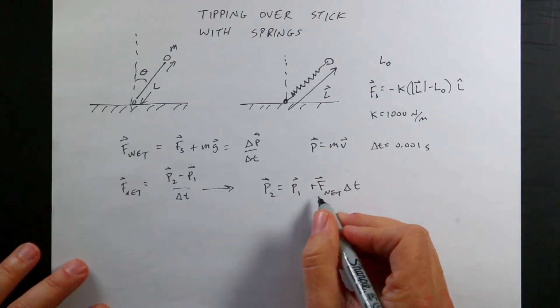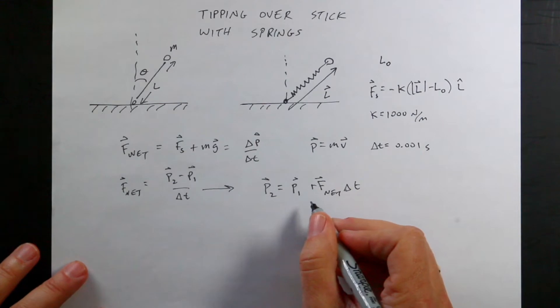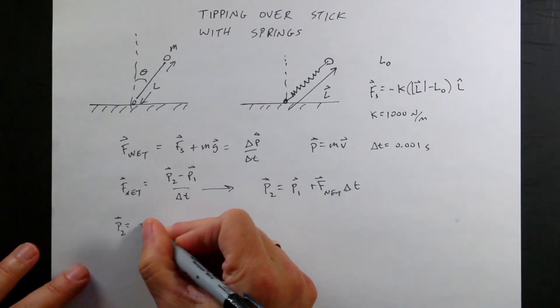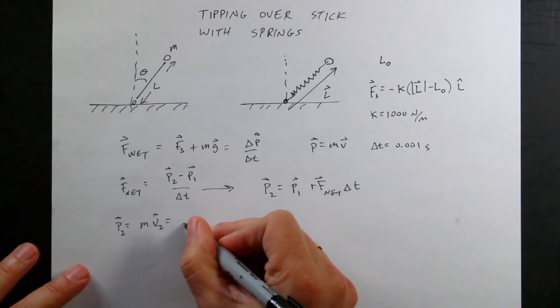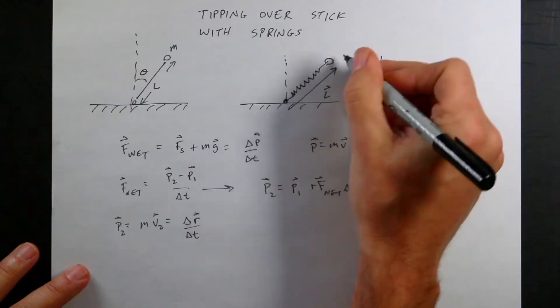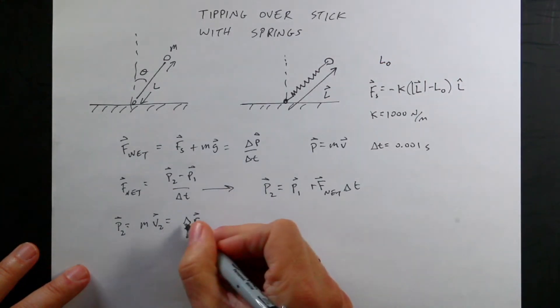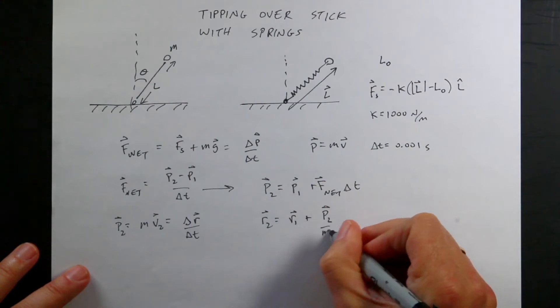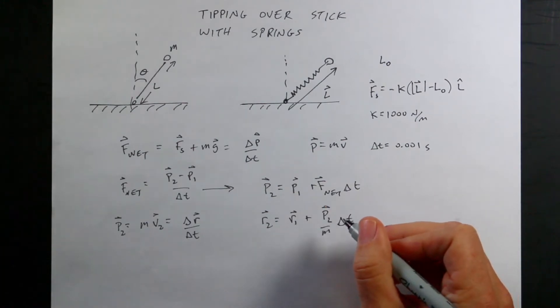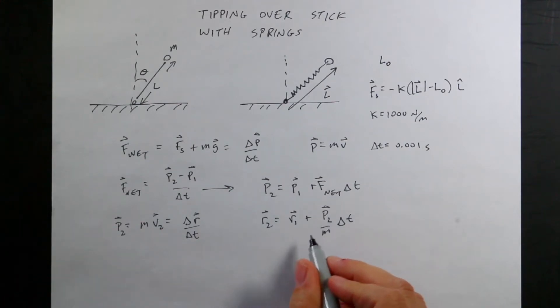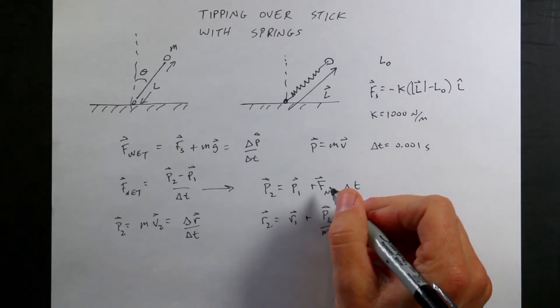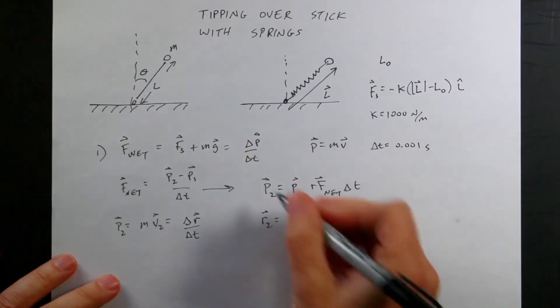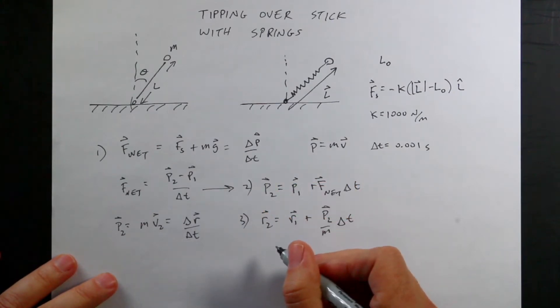Now I can do the same thing with this final momentum. I can say P2 is going to be MV2 equals delta R over delta T, where R is the position of the mass. And I can solve this for R2. I get R2 equals R1 plus P2 over M delta T. This is what we do. Number one, calculate the force. Number two, update the momentum. Number three, update the position. Then just do it all over again. So I can keep on doing this over and over again.